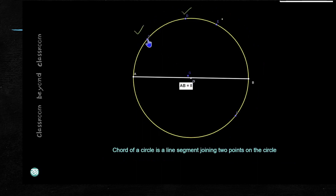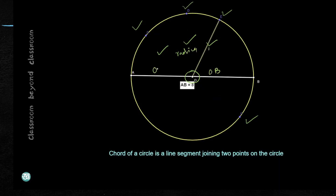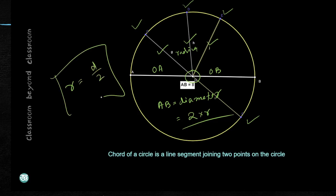The distances from the center to the closed curve are called the radius. OB and OA are both radii, but AB equals the diameter of the circle. The diameter is equal to twice the radius, or equivalently, the radius is equal to half the diameter.